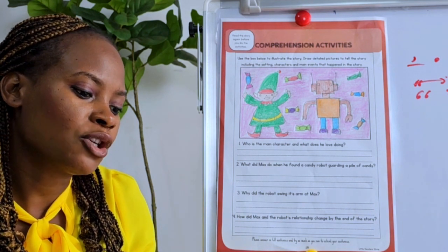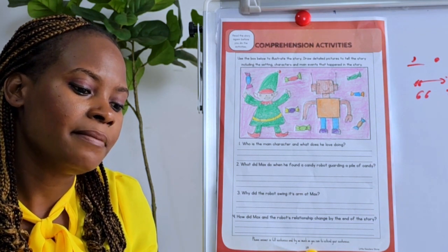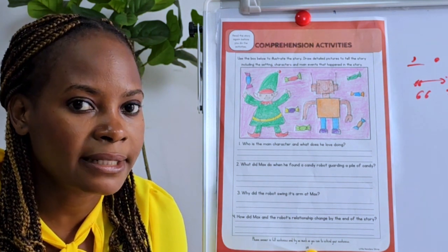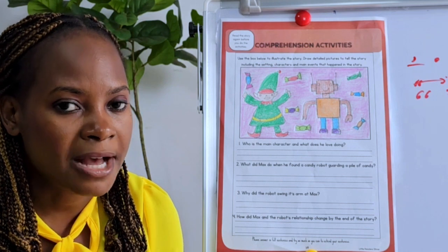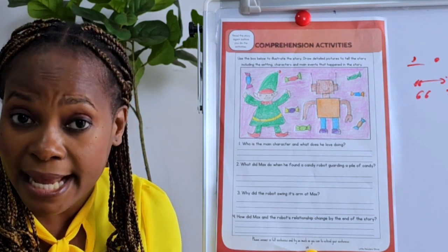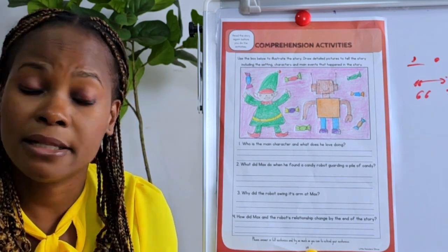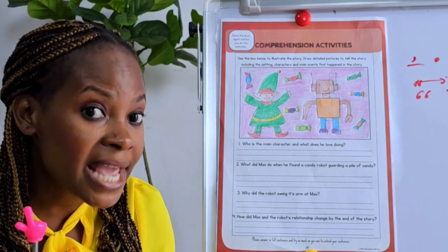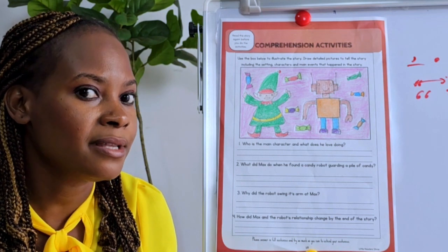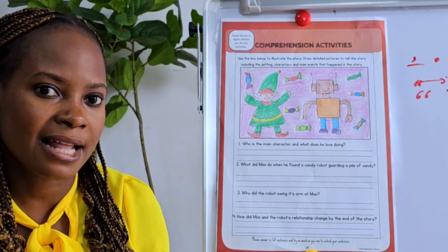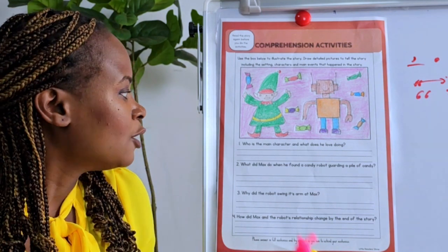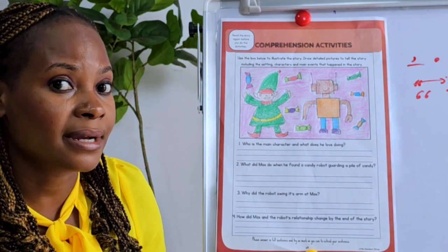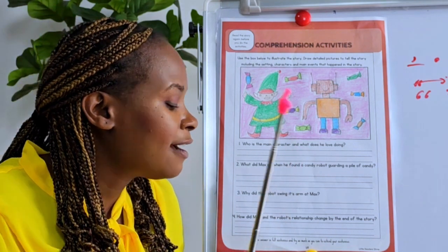'In a sweet land called Candyland there lived a mischievous elf named Max.' Now when they talk about main character, they mean the person or animal that takes most parts in the story — the character whose name appears a lot of times. Which character is that? That is Max. So who is the main character? Max is the main character. And what does he love doing?